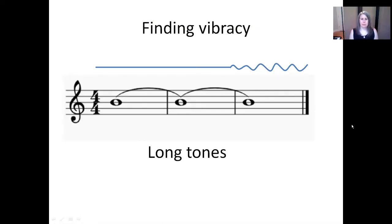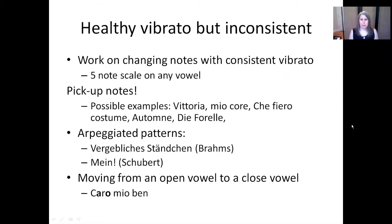So let's recap. For students with minimal vibrato, use long tones with Voce Vista to allow the student to see when the oscillation of vibrato starts, as a way of reinforcing the sensations — both aural and physical. For those with a healthy vibrato that is inconsistent, use a five-note scale to build consistency of vibrato across changing notes. Another place to look is on pickup notes, where students who generally sing with vibrato will often sing with a less vibrant tone. Arpeggiated patterns also present a challenge, and this is a great place to work on maintaining consistent vibrato.